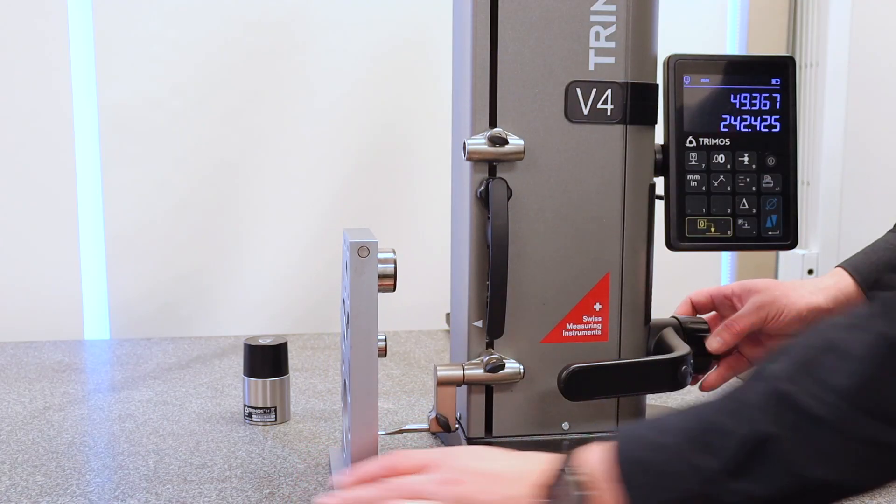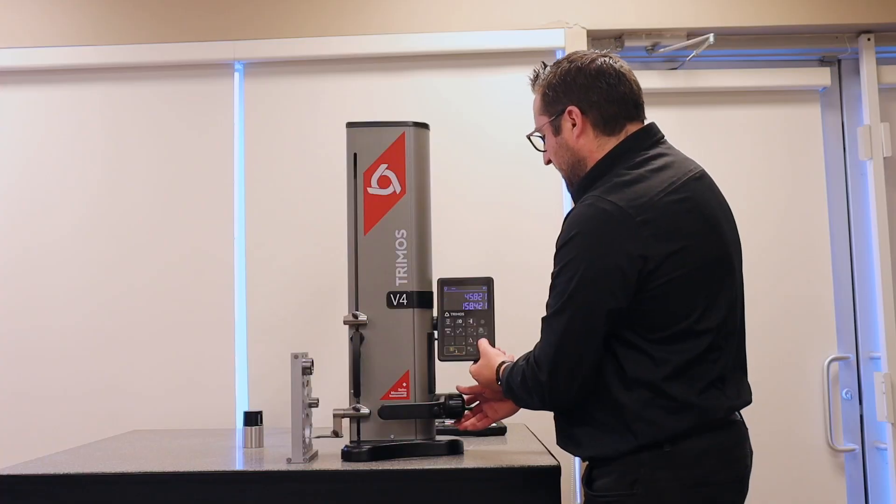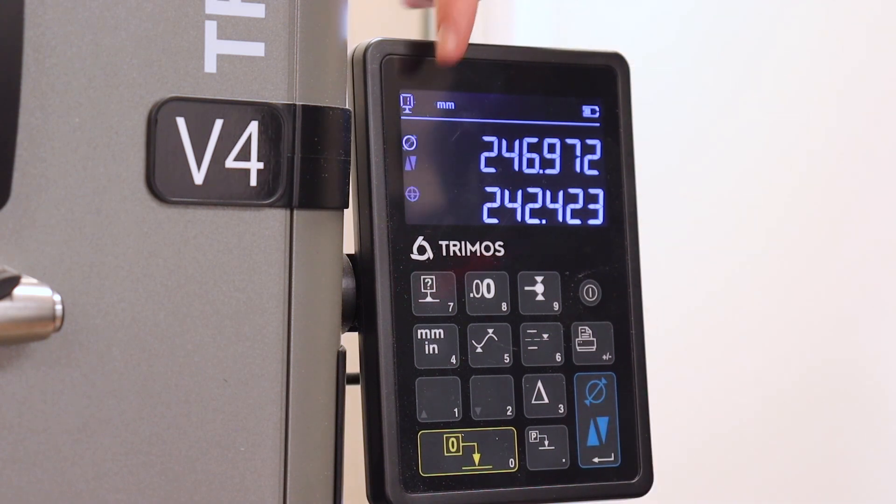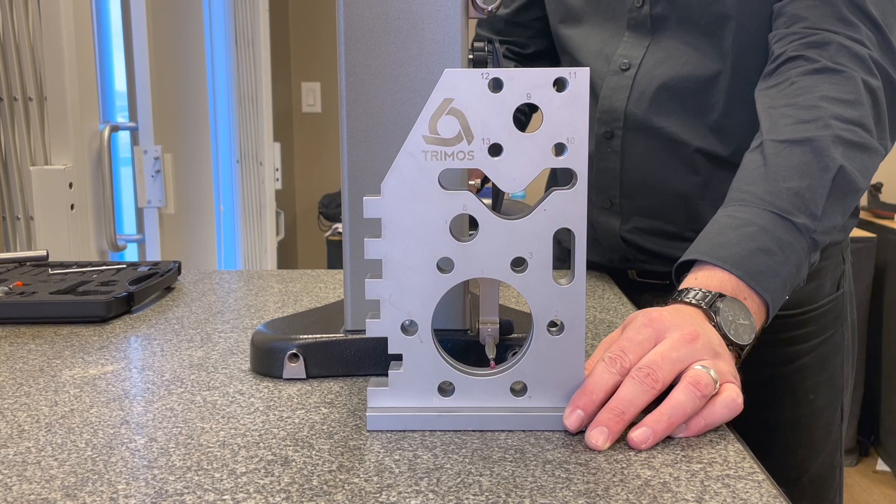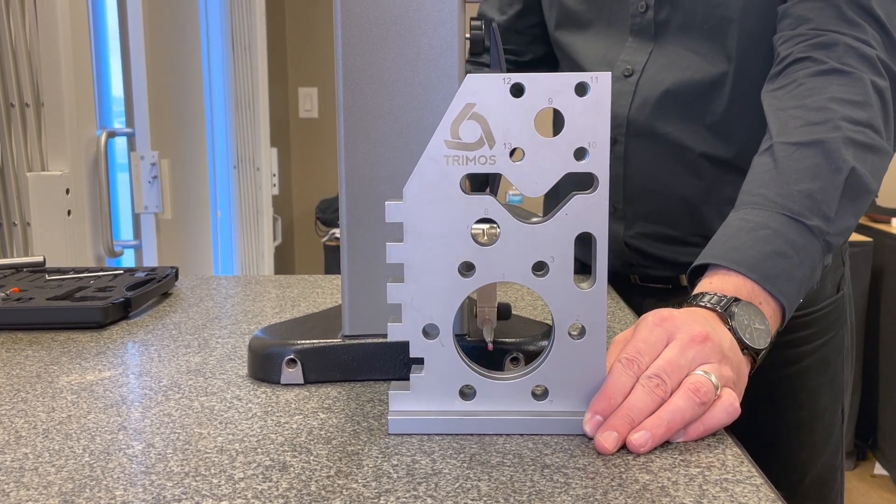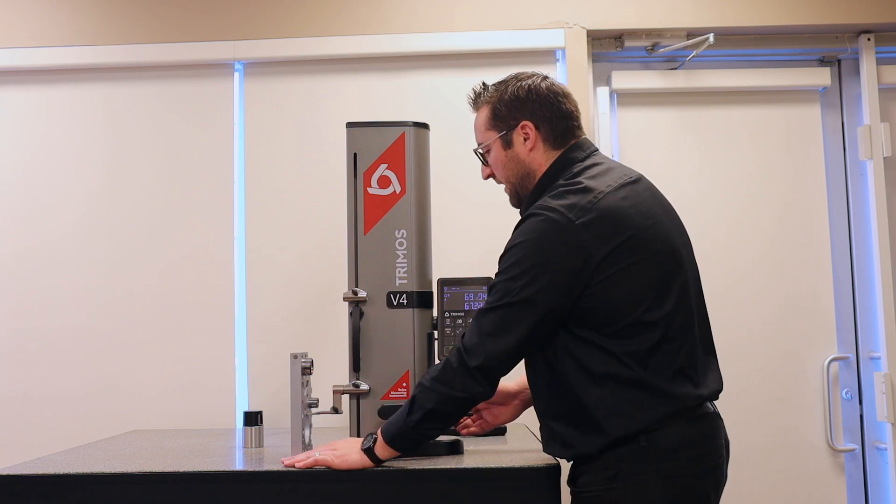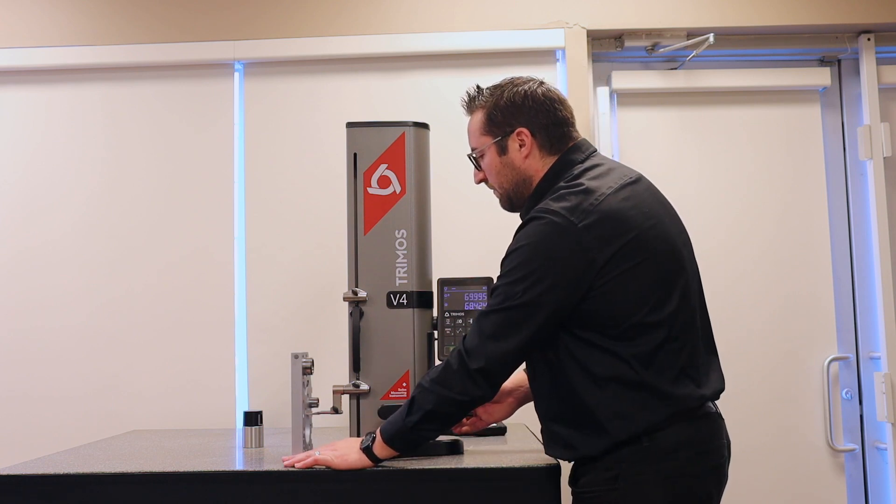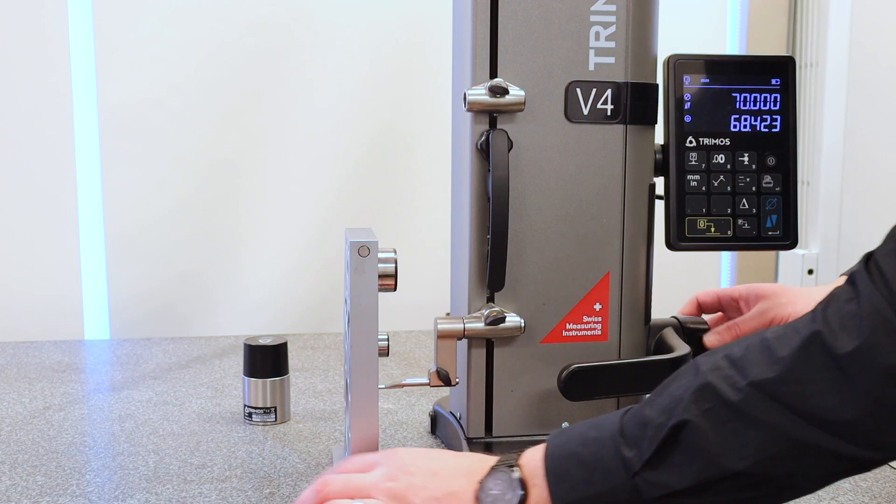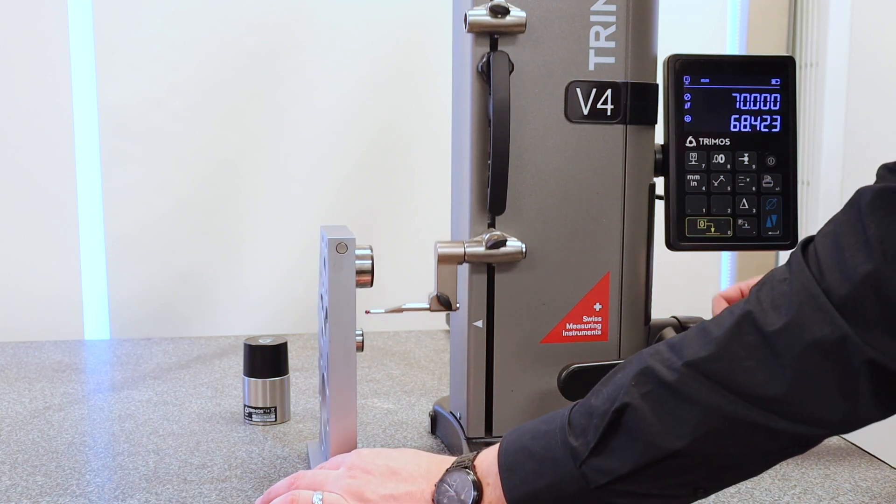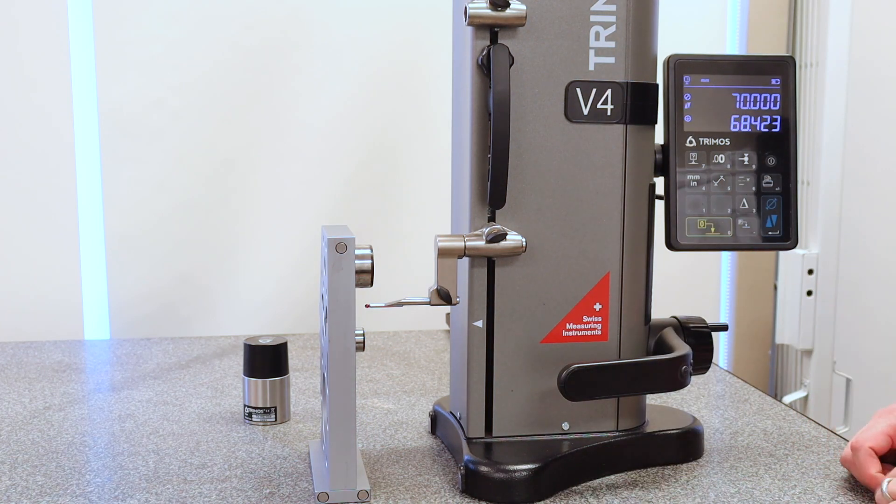Our second topic for today is how to measure diameter. To measure a diameter, we press the blue key here. You'll see the diameter symbols flashing on the display. So we're simply going to pass through to find the lowest point and then proceed to the other side of the bore to find the highest point. And so we've got the diameter of the bore as well as the center line of that bore to our reference point.